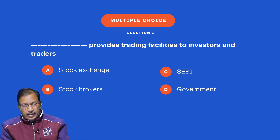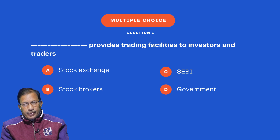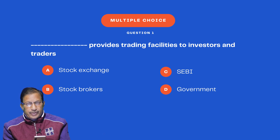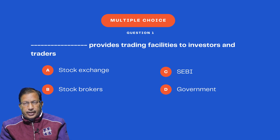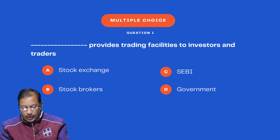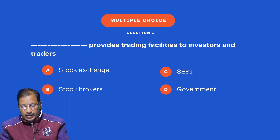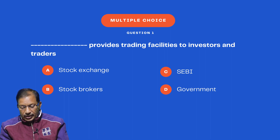Now we go to multiple choice questions. I have prepared some MCQs but you should study more from the book to be aware of the variety of questions coming in the exam. Question 1: Blank provides the trading facility to investors and traders. Options are: stock exchange, stock brokers, SEBI, and government.